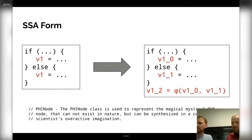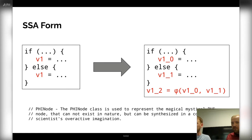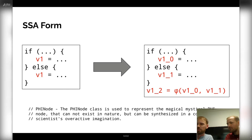The SSA form is used throughout the middle end by most modern compilers. Also note that each source of a phi node is associated with a predecessor block, and each source is considered to be read at the end of the corresponding predecessor. So in this example, V10 is read at the end of the then branch and V11 is read at the end of the else branch.